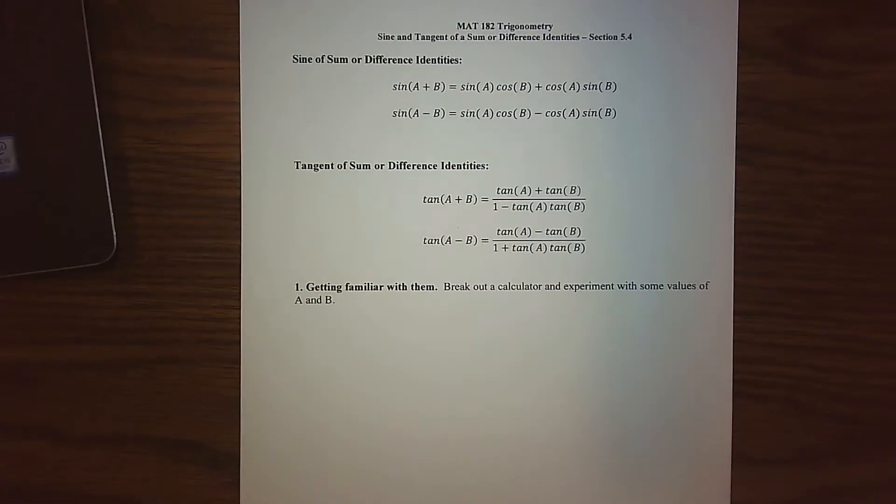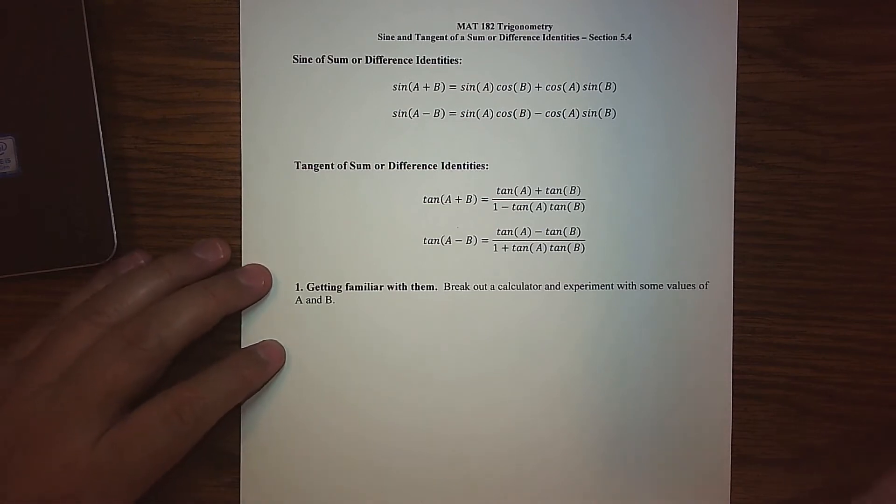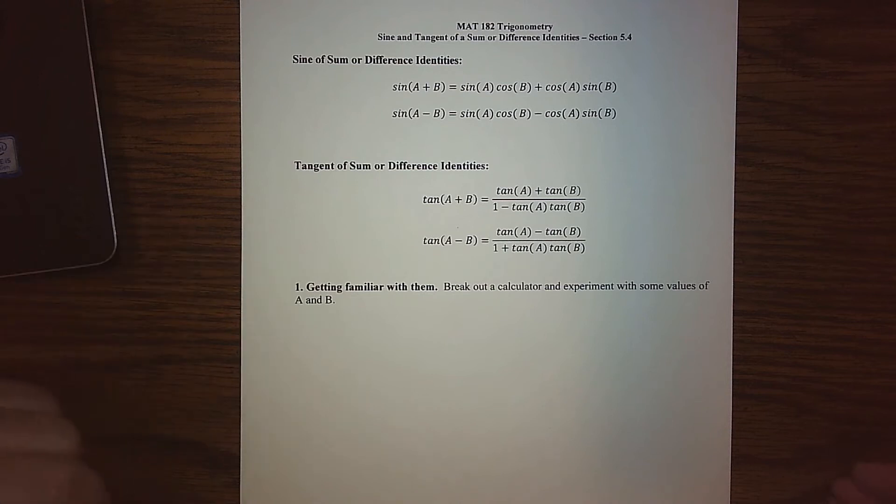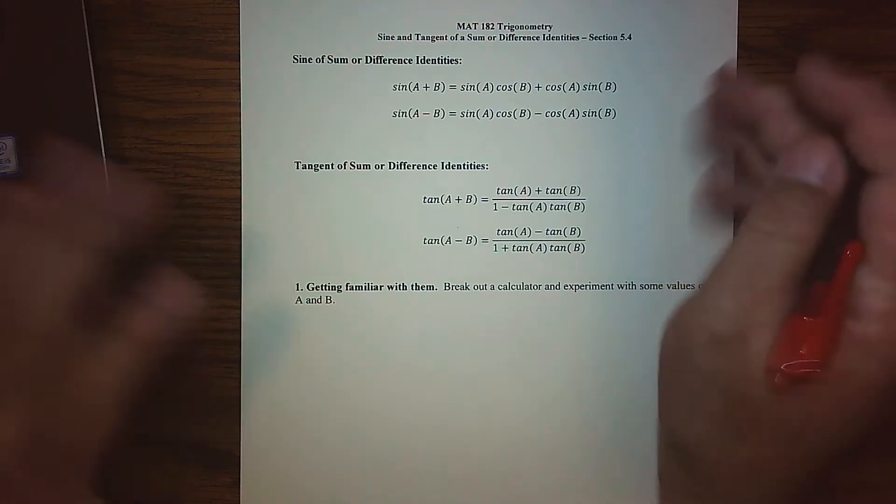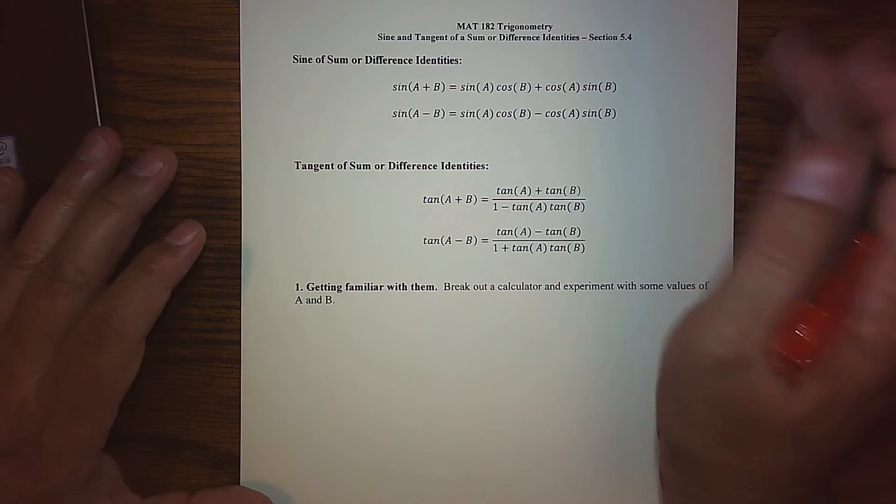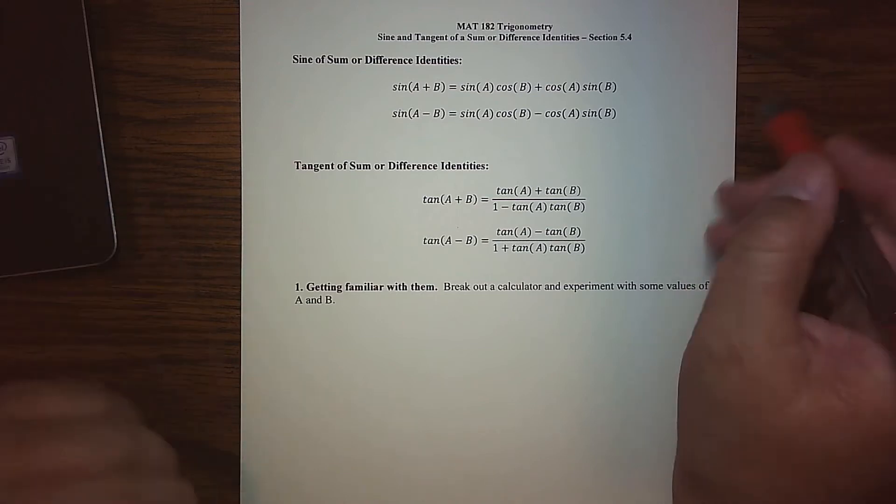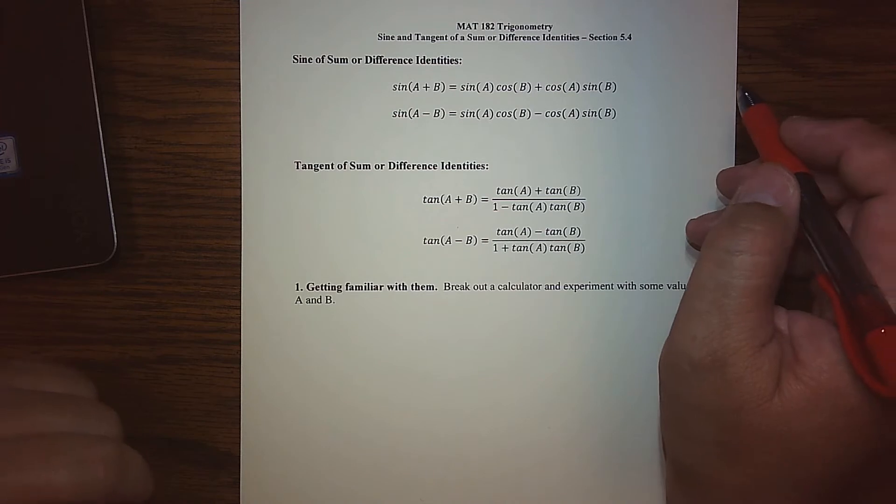So now that we've covered in 5.3 the sum and difference identities for cosine, in 5.4 we basically look at the two other big guys, the sine and tangent, and what their sum and differences are. Again, here's the actual identities themselves. You don't need to memorize them. They'll be given in a cheat sheet or you can have them out or whatever the case might be. Just make sure that you can use them and go from there.